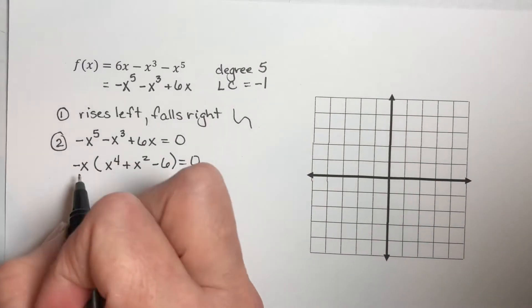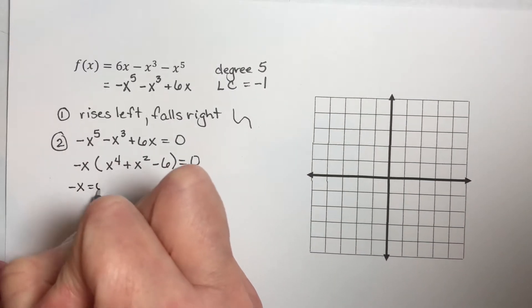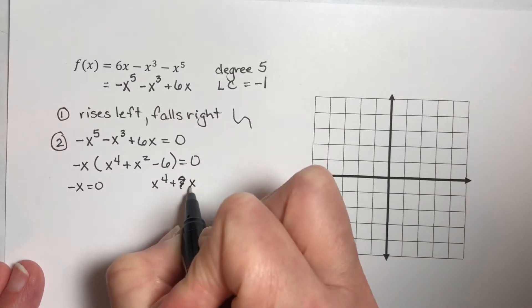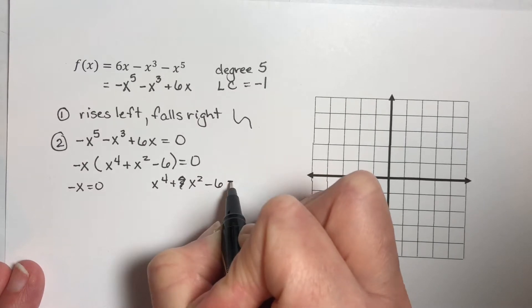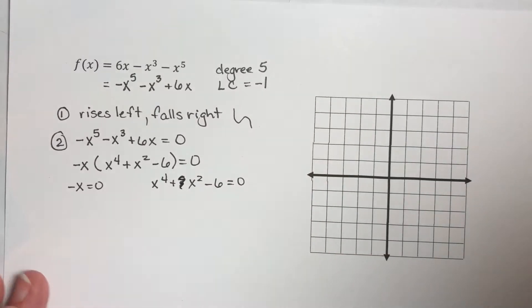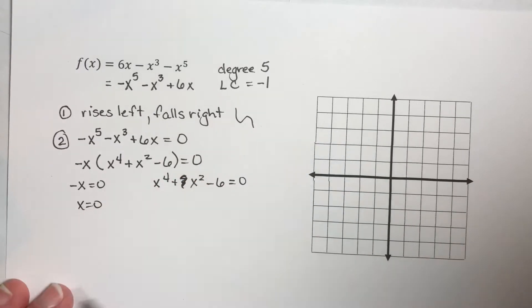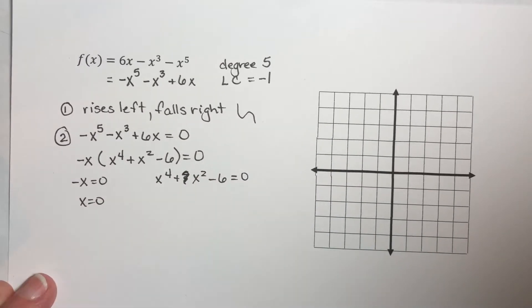So I have negative x equals zero, and I have x to the fourth plus x squared minus 6 is equal to zero. Now from here, I get x equals zero. So I've got one of my zeros right here.